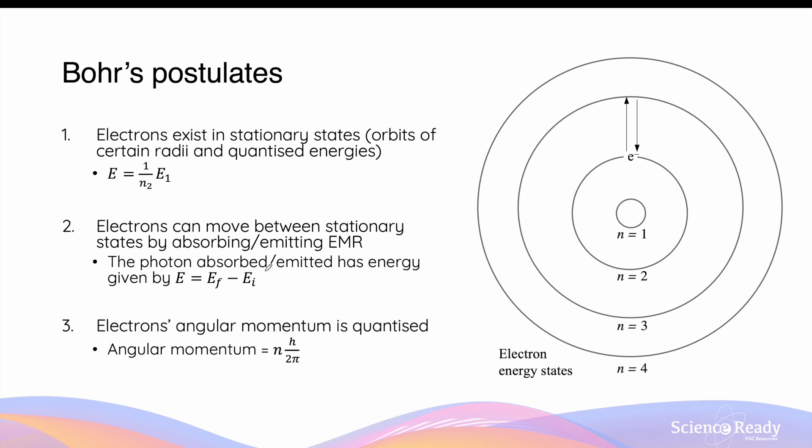Bohr's third postulate states that electrons' angular momentum is quantized. The angular momentum of the electrons in the Bohr model is given by N times H over 2π, where H is Planck's constant and 2π is also a constant.